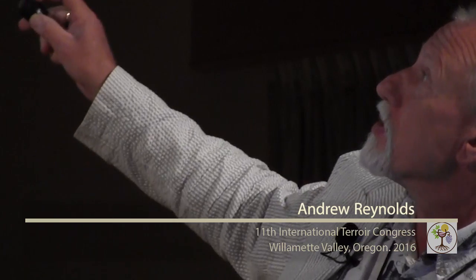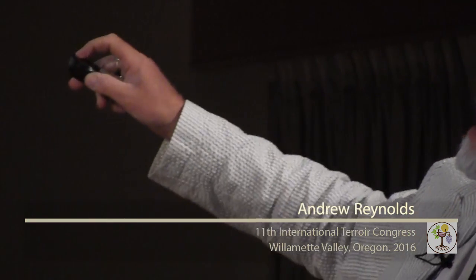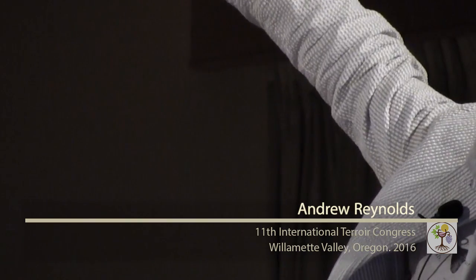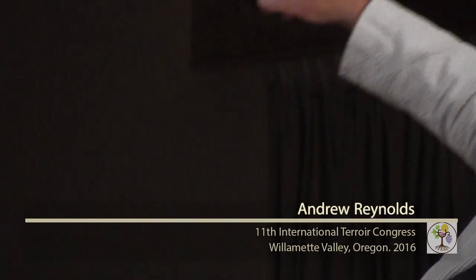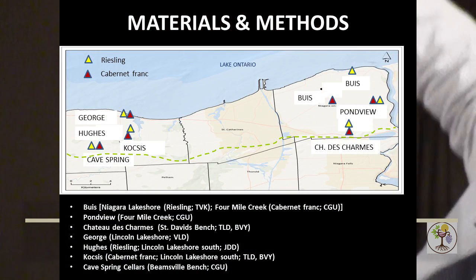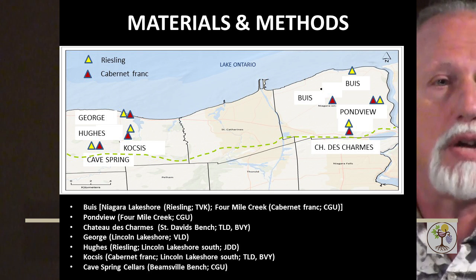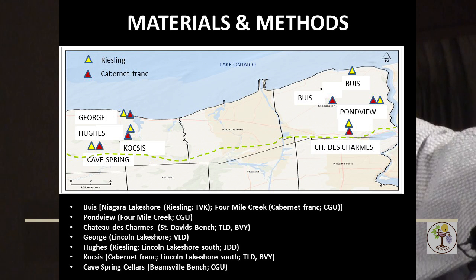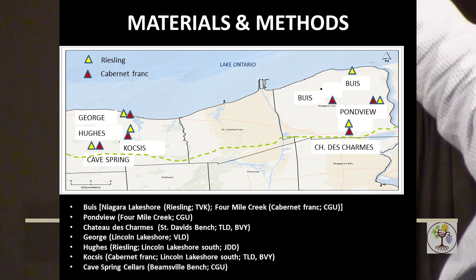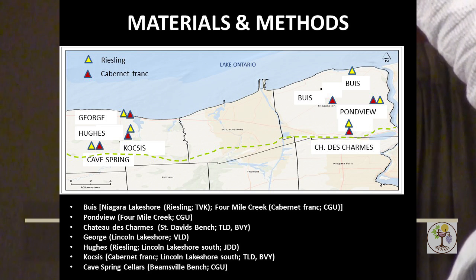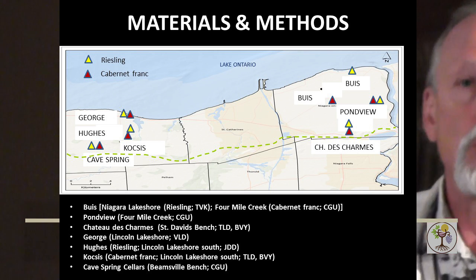We'll talk a little bit about where we're doing this work. This is just a sketch of the Niagara Peninsula. We have twelve vineyard blocks across six different sites. Here we have Lake Ontario — so Toronto would be up here — Lake Erie down here, so Buffalo would be about here. The geology is entirely sedimentary. The parent material above the escarpment, which is this dotted green line, is all dolostone. Below the escarpment is primarily sandstone and shale.